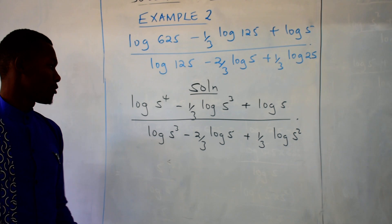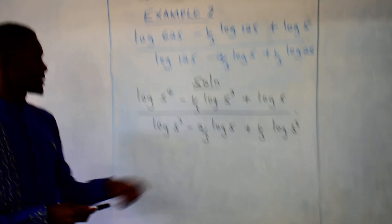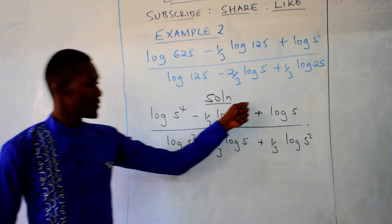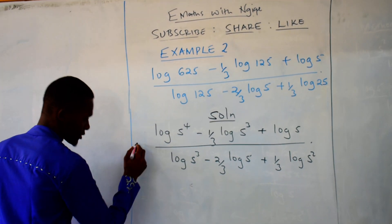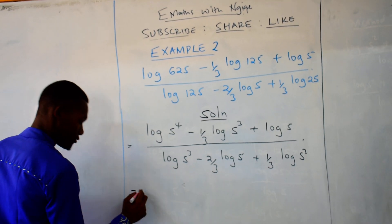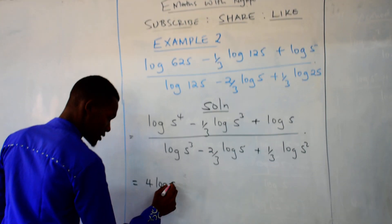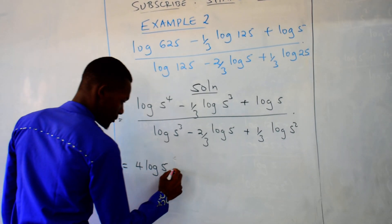Then we know the log of logarithm that involves the powers. So if you have a power, you drop the power, and so on. So this one gives us what? So 4 log of 5 minus.